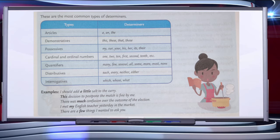First is articles. Articles are A and the. Second is demonstratives like this, these, that, those. Next possessives: my, our, your, his, her, its, their.